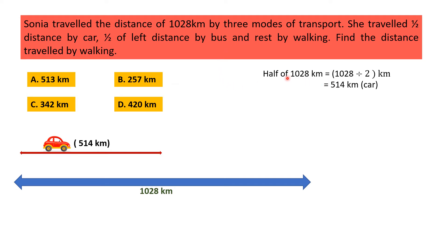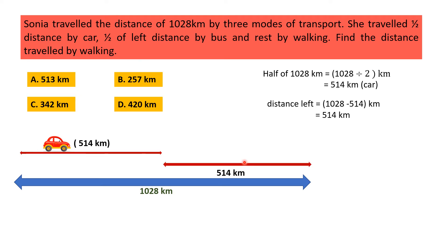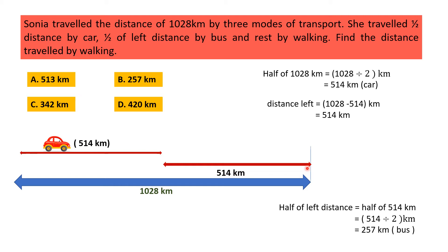Total distance was 1028 kilometers and 514 kilometers was traveled by car. Distance left is equal to 1028 minus 514 kilometers, that is 514 kilometers. Now half of the left distance by bus: half of 514 kilometers is 514 divided by 2, that is 257 kilometers.